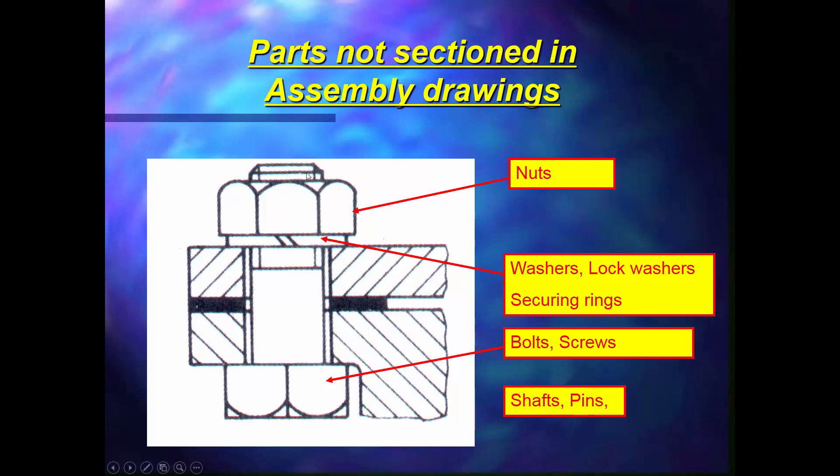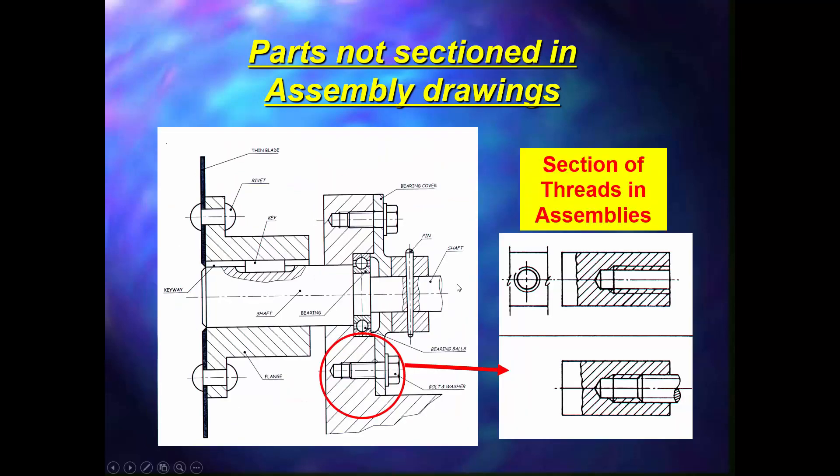The protruding thread after the nut is normally 0.3 times the diameter to allow for the safety of the locking mechanism.